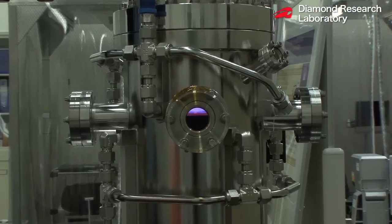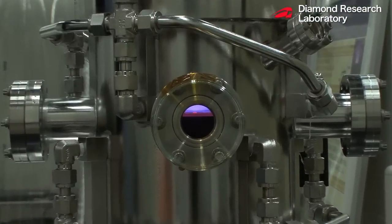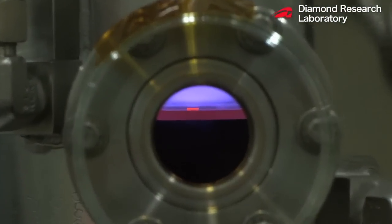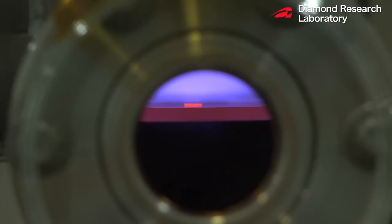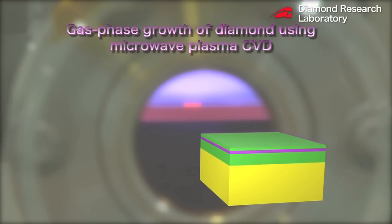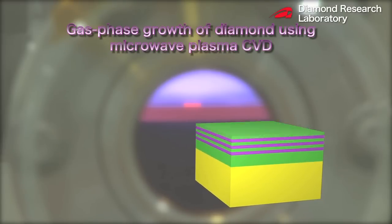The diamond research laboratory is using carbon-12 and carbon-13 isotopes, which are carbon atoms with different mass, in thin films formed by gas phase synthesis using microwave plasma CVD.